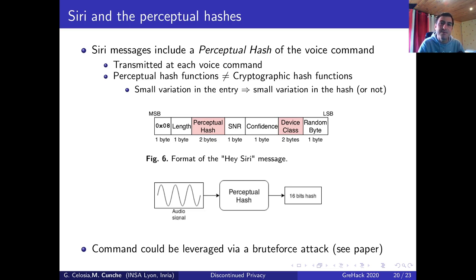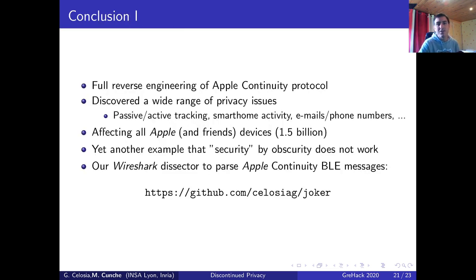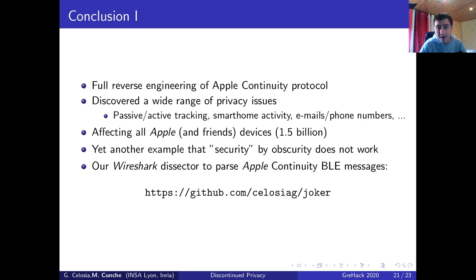This was the last attack I was going to talk about. In this work, we presented a full reverse engineering of the Apple continuity protocols and found that they were affected by a large number of privacy issues. Here I've only presented four of them, but there are way more. They include tracking, inferring smartphone activity, and discovering email and phone numbers. The bad news is that all those issues affect a pretty large number of devices — all Apple devices are affected, but also devices of affiliated companies, which we estimate around 1.5 billion devices worldwide. This is another example that Security by Obscurity does not work.